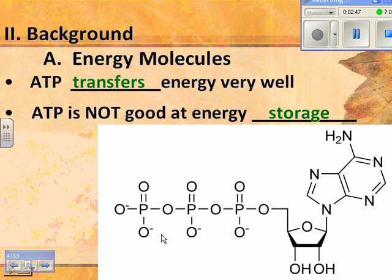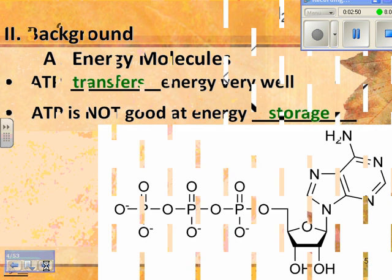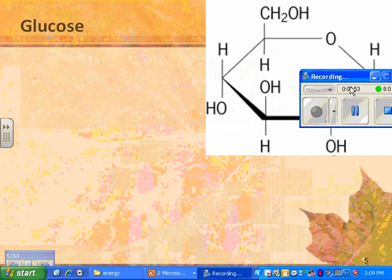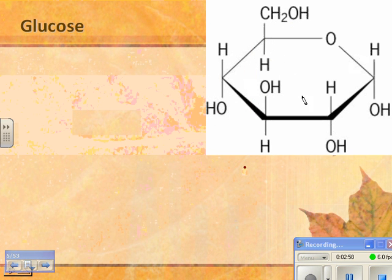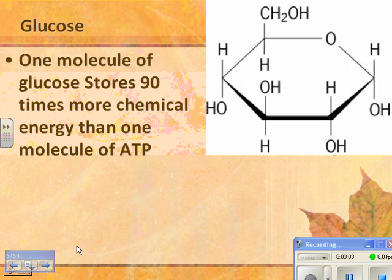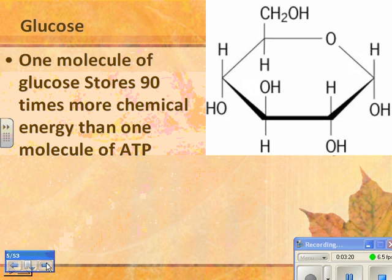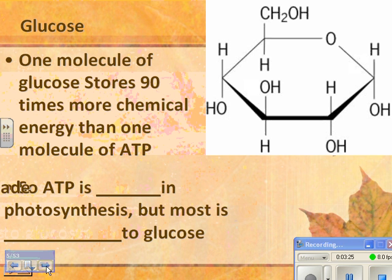Glucose is a really good energy storage molecule, at least short term. If you want to store it longer, you put a bunch of these monomers together to make starch if you're a plant. One molecule of glucose stores 90 times more chemical energy than one molecule of ATP, so it's really good at energy storage. For long-term storage, you'd make a polysaccharide, and eventually convert it to fat — at least if you're an animal.